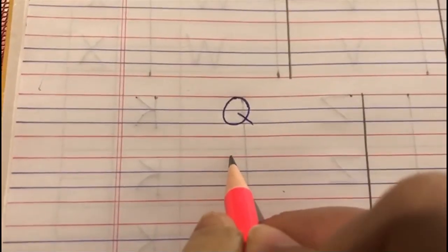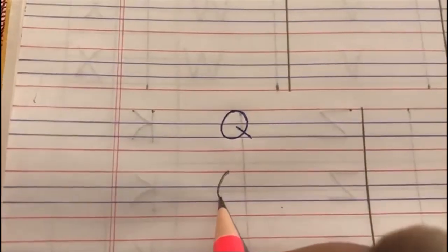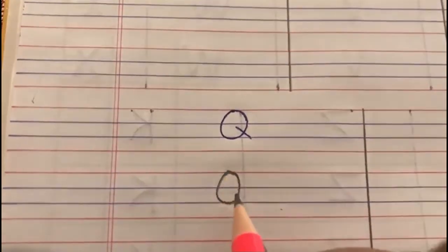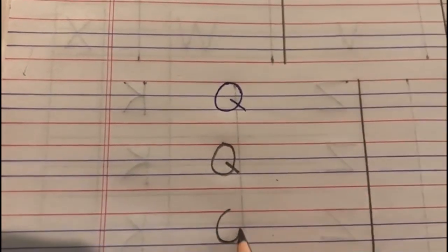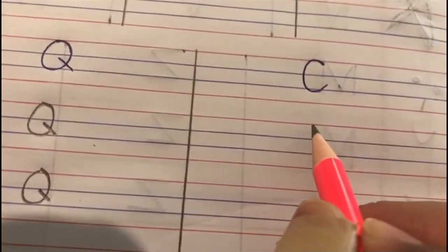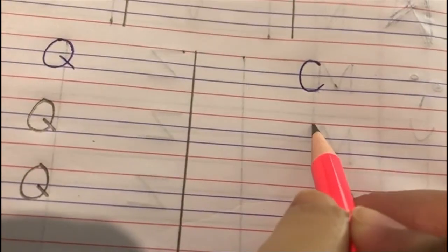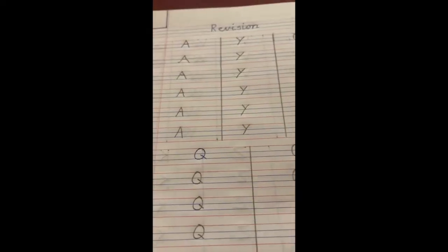Now, let's see how we are going to write letter Q. Start from the red line, go down to the blue line, come up and a slanting line, Q. Again, start from the red line, go down to the blue line, come up, slanting line, Q. And, let's see how to write letter C. Start from the red line, go down, come to the blue line.